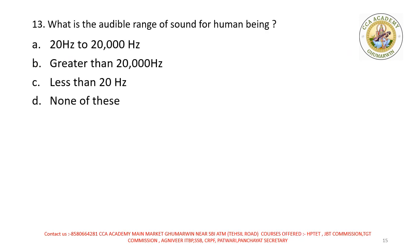Next question: what is the audible range of sound for human beings? Options: 20 Hz to 20,000 Hz; greater than 20,000 Hz; less than 20 Hz; none of these. Direct question — right option is A: audible range for human beings is 20 Hz to 20,000 Hz.